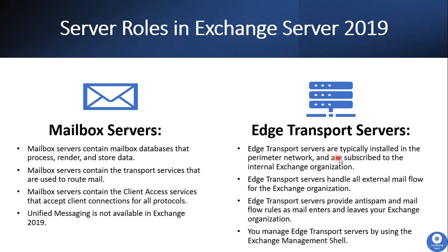The Edge Transport servers are typically installed in the perimeter network and are subscribed to the internal Exchange organization. This server role is installed on a non-domain-joined machine and is designed to sit in the perimeter network or demilitarized zone. The Edge Transport Server role handles all external mail flow for the organization and provides features like anti-spam and email flow rules as mail enters and leaves your Exchange organization. You can manage this role using the Exchange Management Shell.